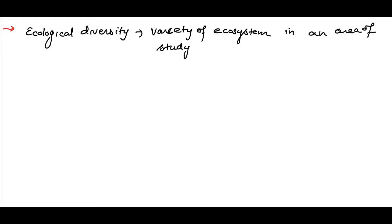For example, if you talk about India, you have deserts, rainforests, and if you go to Kashmir you will find xerophytic plants. You go to Meghalaya and also find xerophytic plants. In southern India you will find tropical rainforest areas. This is called ecological biodiversity.